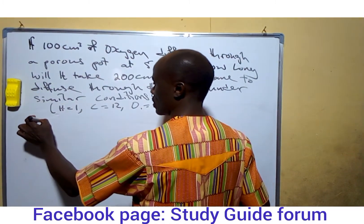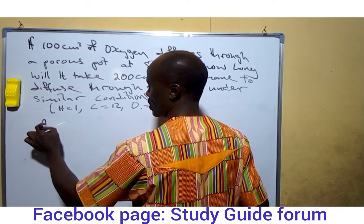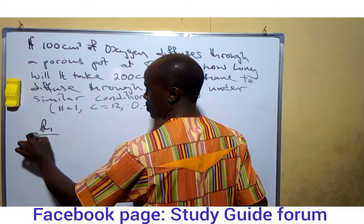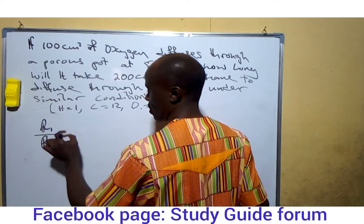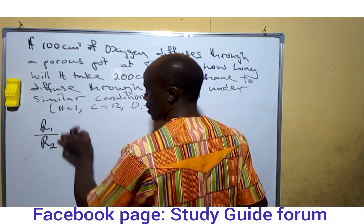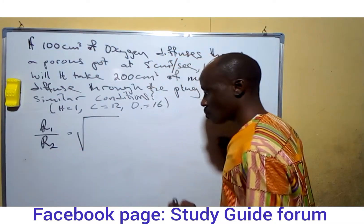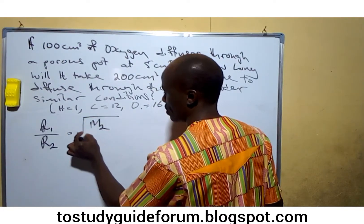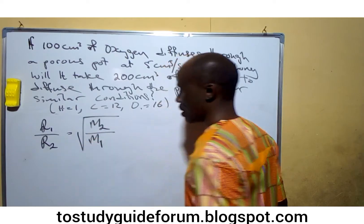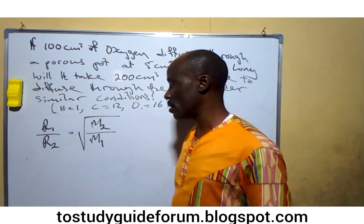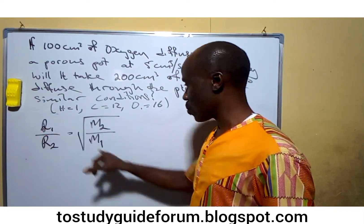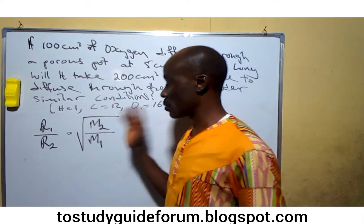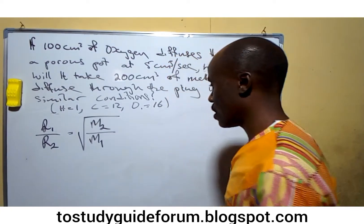Let's say the first gas is Gas 1 and the second is Gas 2. The rate of diffusion of a gas is inversely proportional to the square root of its relative molecular mass. So the rate of Gas 1 is inversely proportional to the square root of the relative molecular mass M₁, and similarly for Gas 2.